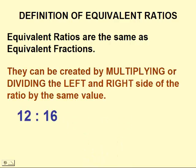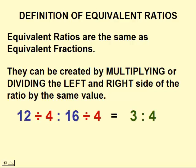In ratio form, they can be created by multiplying or dividing the left and right side of the ratio by the same value. In this case, we'll take the ratio 12 to 16 and divide the left side and right side by 4 to come up with the ratio 3 to 4. So 12 to 16 is the same as the ratio 3 to 4. These are equivalent ratios.